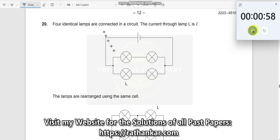Question number 20. Four identical lamps are connected in the circuit. These are identical lamps, which means what? Resistances are the same. The current through lamp L is I. So here the current is I.